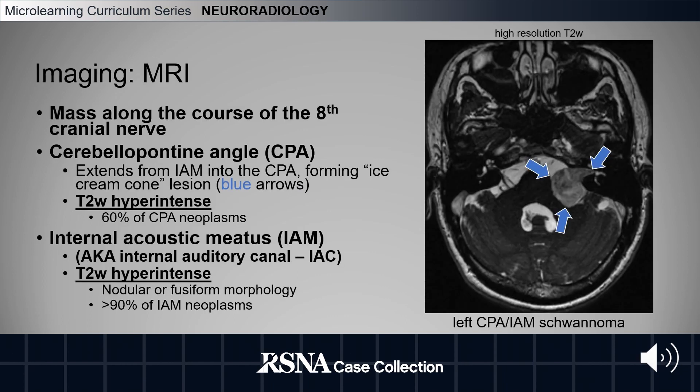MRI findings include a T2-weighted hyper-intense neoplasm along the course of the eighth cranial nerve. This course includes the internal acoustic meatus, also known as the internal auditory canal, and the cerebellopontine angle.